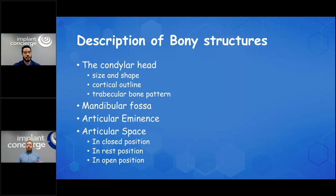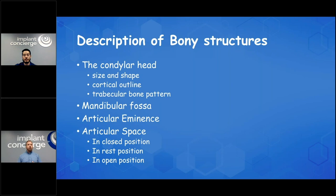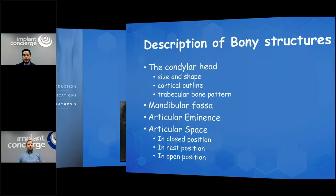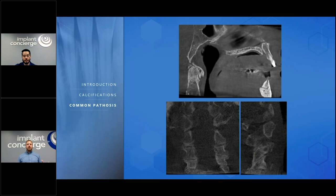Cervical vertebrae has the exact same structures — discs, articular spaces — so you're looking for the same things: sclerosis, subchondral cysts, and osteophyte formation. Osteophyte formation is when a bony spicule starts growing off of bone — not free bodies, but slowly pushing outwards. In the coronal view of the cervical vertebrae it's not perfectly vertical — between each joint there's bone being grown. Looking at the coronal view, you can see how the vertebrae are not perfectly aligned with bone growing at each joint level.